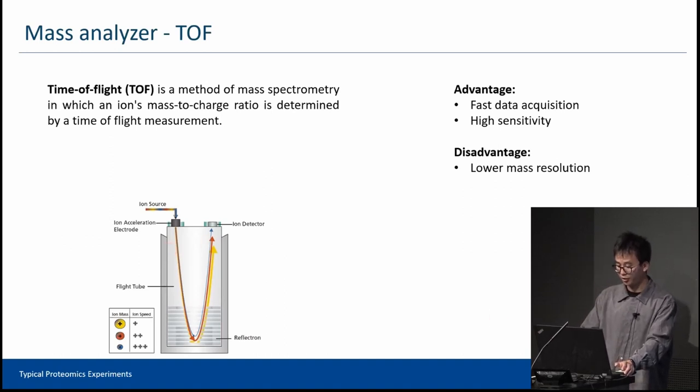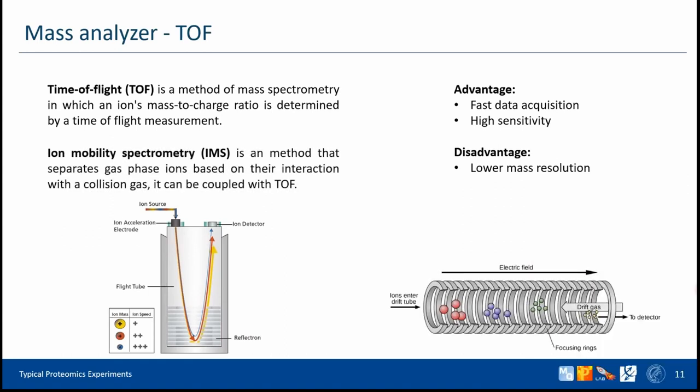In recent years, it's very popular to couple ion mobility spectrometry together with TOF to add an extra step to separate molecules, like Timstof. Here, ions are propelled through a tunnel by gas flow. At the same time, an electrical field controls each ion from moving beyond a position defined by ion mobility, where the push from gas flow matches the force of the electrical field. Ramping down the electrical field allows selectively releasing ions from the tunnel according to their mobility. This extra separation works very well.